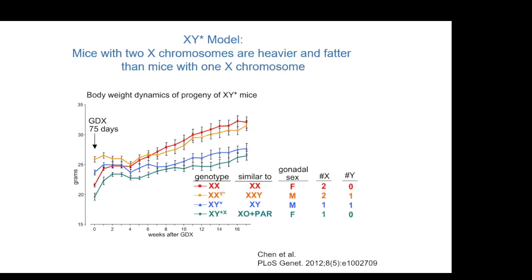We then go to a second model, the XY* model developed by Eva Eicher at Jackson Labs, where we can vary sex chromosomes in different ways and compare animals with two X chromosomes versus one, or with one Y chromosome versus zero. We do the same experiment — gonadectomy at about two and a half months — and the two groups that become heavier and fatter are those with two X chromosomes, versus the two groups on the bottom with only one X chromosome. So this is an X chromosome dosage effect.